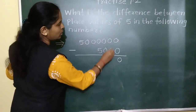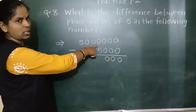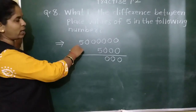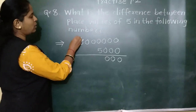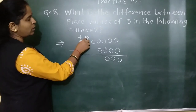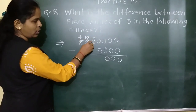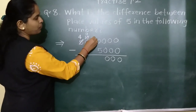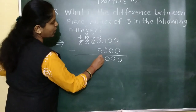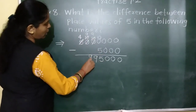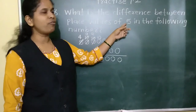Subtracting 5,000 from 50,000,000: 0 minus 0 is 0, 0 minus 0 is 0, 0 minus 0 is 0. Can we subtract 5 from 0? No. So we borrow 1 from 5, leaving 4. The borrowed 1 makes 10 at the next place; we borrow again, leaving 9. We borrow again, leaving another 9. Now 10 minus 5 is 5. The remaining digits — 9, 9, and 4 — stay as is. So the difference of the place values of 5 in the given number is 49,995,000.